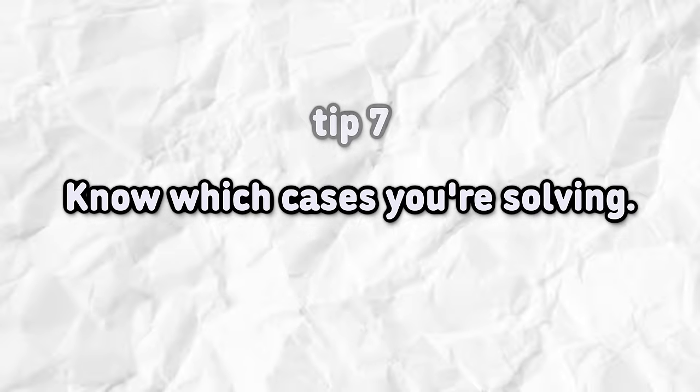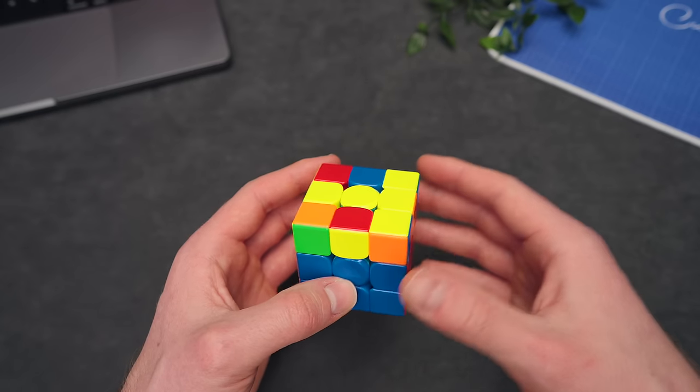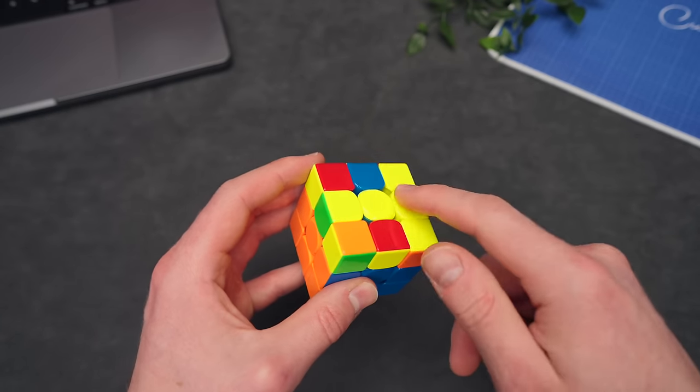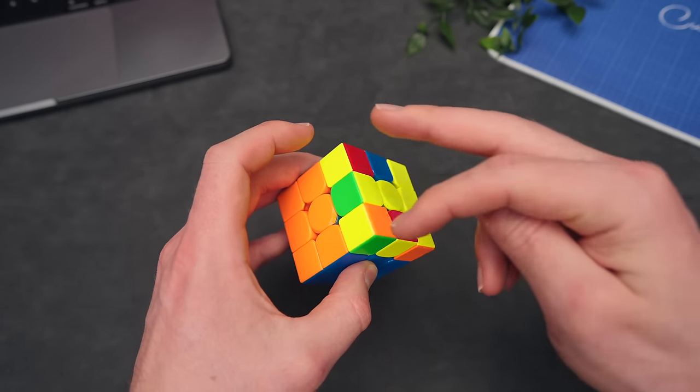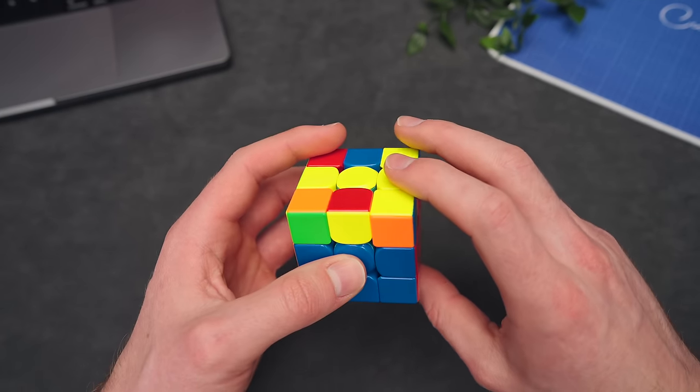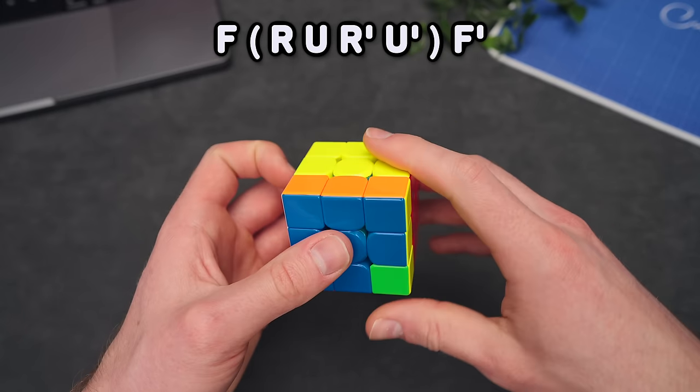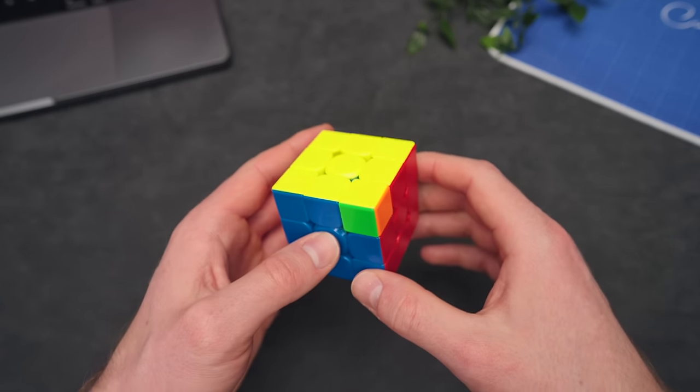Know which cases you are solving. You might have noticed this yourself during solves. But whenever you get a T shaped OLL like here, and you have headlights right there, if you do the line algorithm from this side, so F, sexy, F prime, you would build OLL in one step.